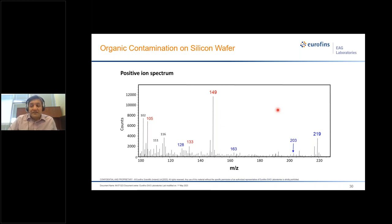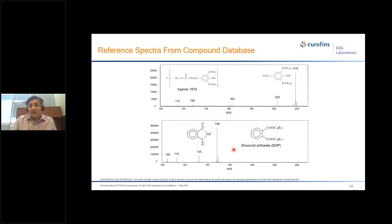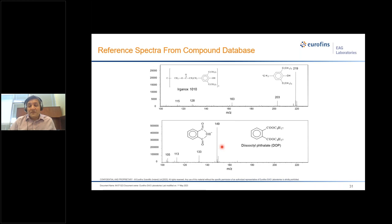Unlike LC-MS or GC-MS where there is separation of compounds before the mass spectrum is generated, in a TOF-SIMS spectrum all compounds on the surface appear simultaneously. If there are five compounds on your surface, all five are seen in the spectrum. To separate them, we identify sets of ions as fingerprints for particular compounds and match them against our database. For example, one set of ions matches Irganox, an antioxidant, and another set of four ions identifies diisooctyl phthalate. Having reference samples or database spectra is very important for compound identification.